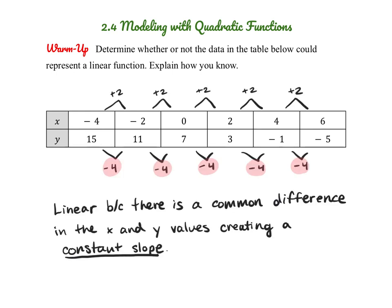So remember, when we're checking to see if data is linear, first we are looking for a constant change in the x values. And once you see that, what we would be looking for is what's called a common difference — are we adding or subtracting the same thing to get to the next y value? Here you can see there is a common difference of negative 4, so we have a constant slope. The change of y over change of x is always the same, and anything with a constant slope would be classified as a linear function.